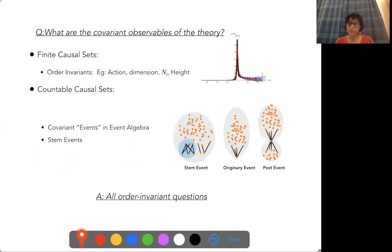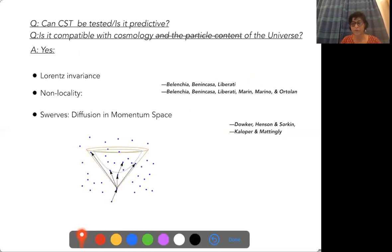What are the covariant observables of the theory? For finite causal sets, they were the entire set of ordered invariants: action, dimension, et cetera. All are covariantly defined. They don't depend on the labeling in the causal set, which is in lieu of covariance in the discrete setting. For countable causal sets in sequential growth, these are events in an event algebra generated by the growth, covariant events that are label-independent. A special class are STEM events. The answer is that all order invariant questions are observables of the theory.